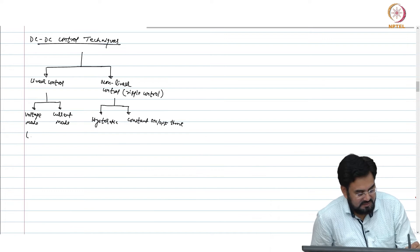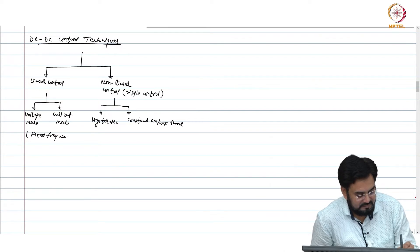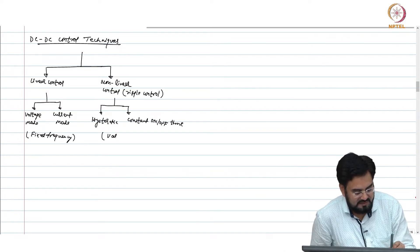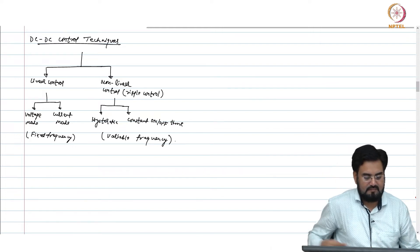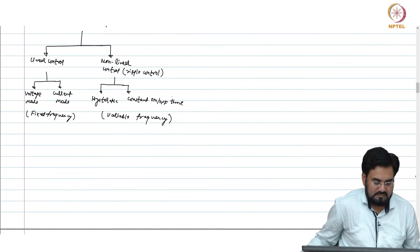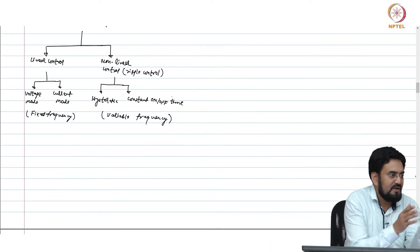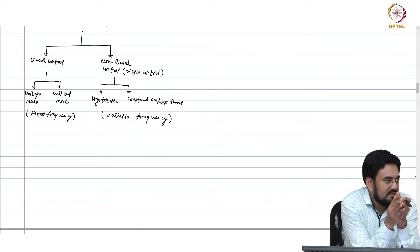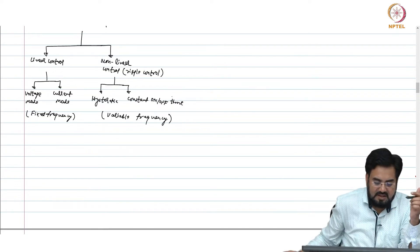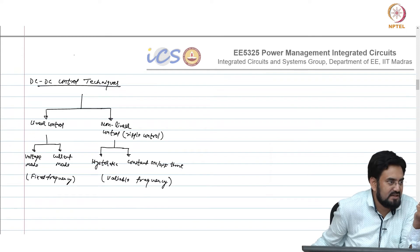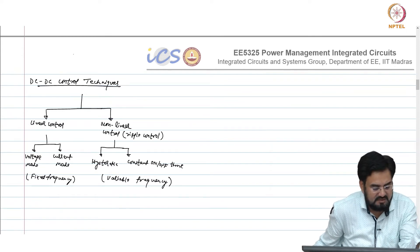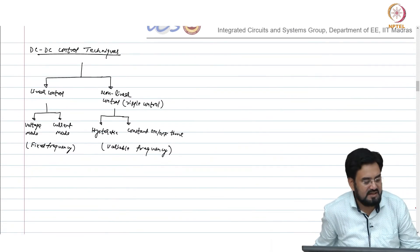This is fixed frequency control versus variable frequency control. If you keep on-time fixed and vary the off-time to change the duty cycle, your frequency has to change — that is why your frequency is variable. The same thing happens in hysteretic control as well.